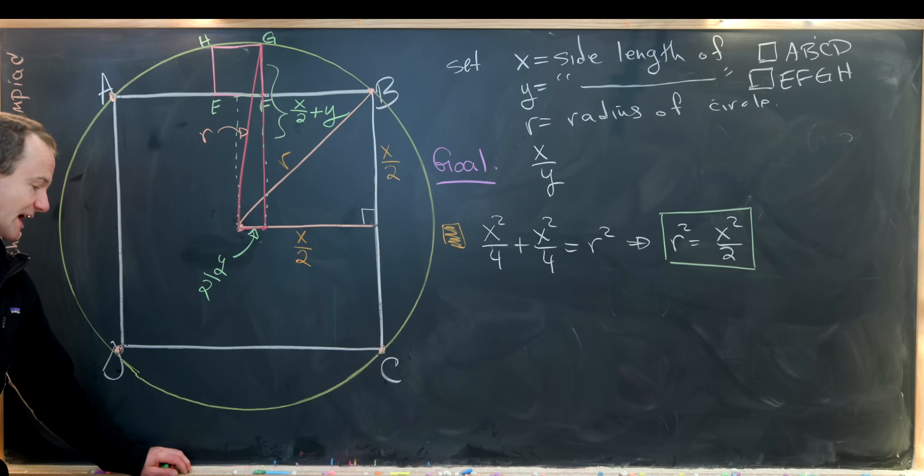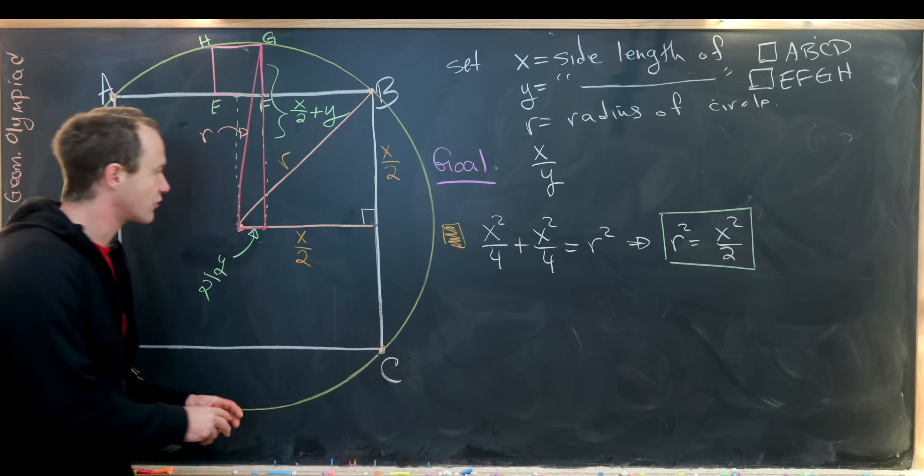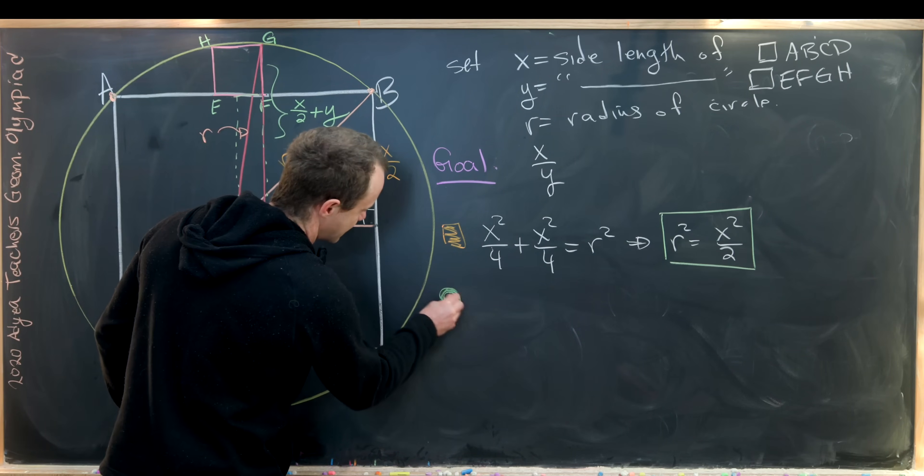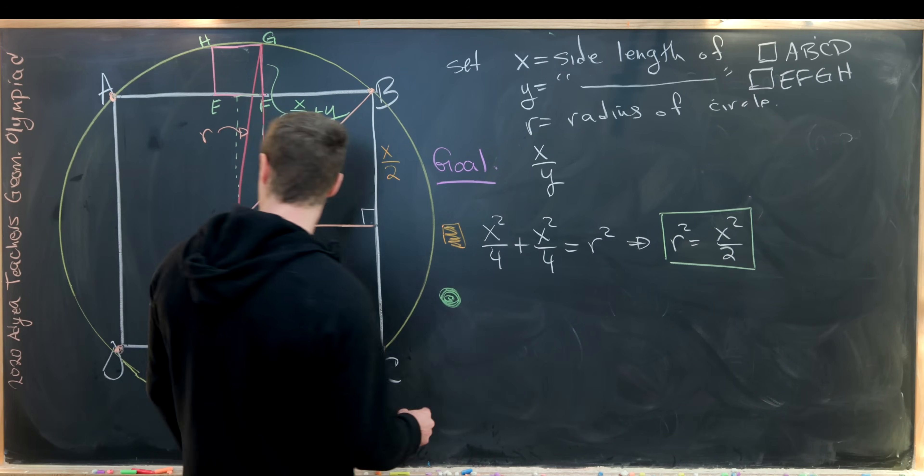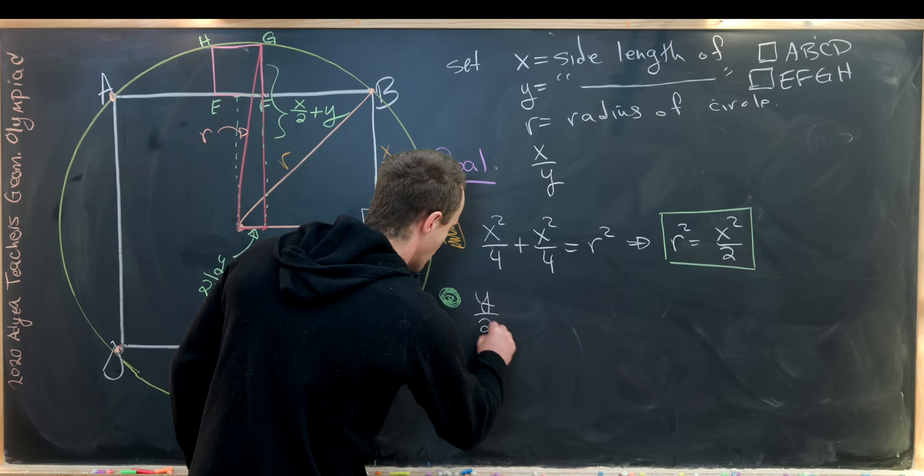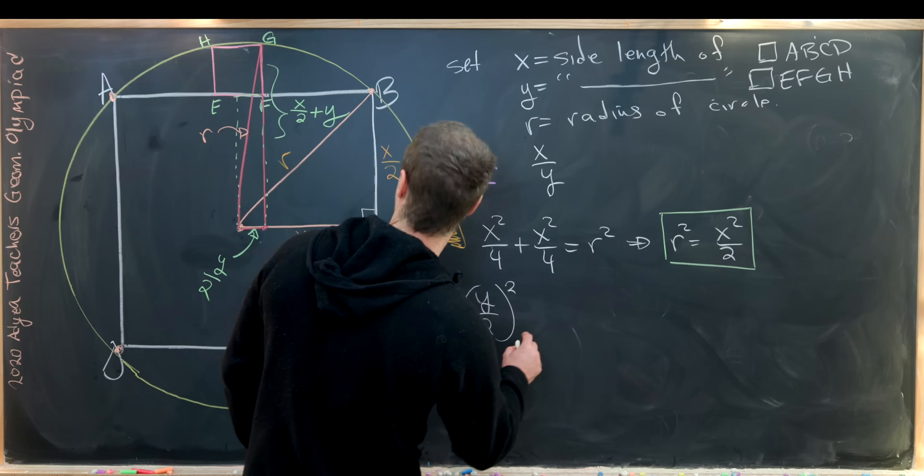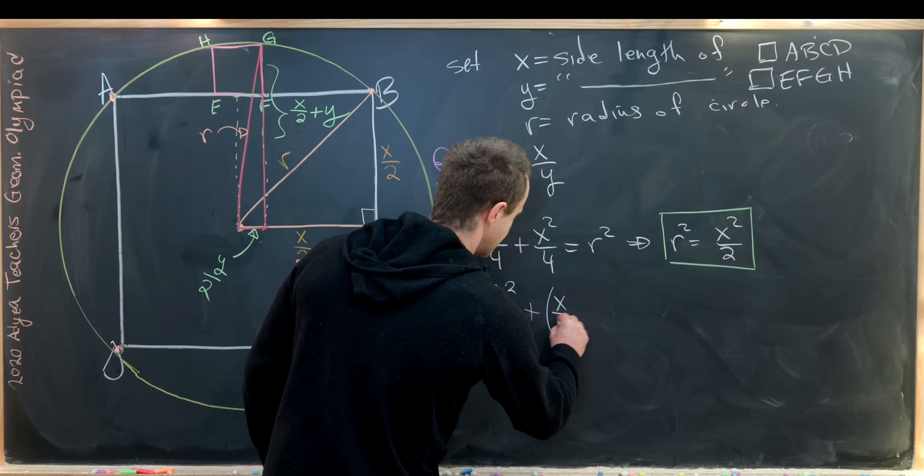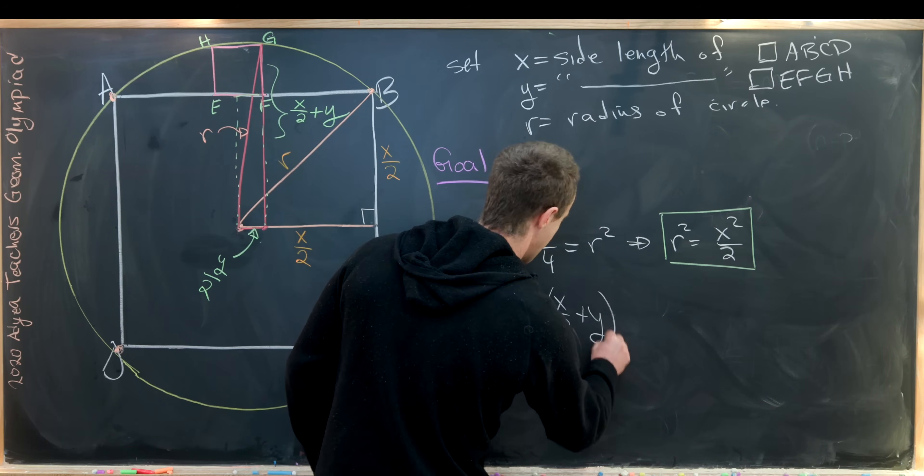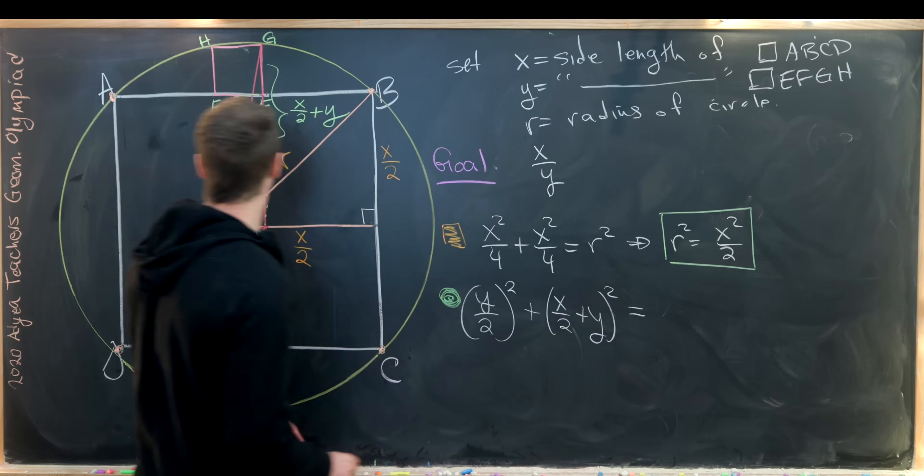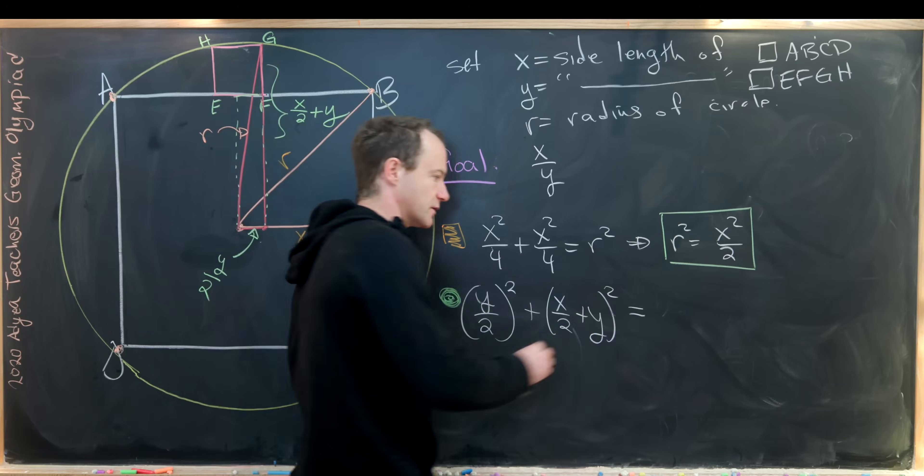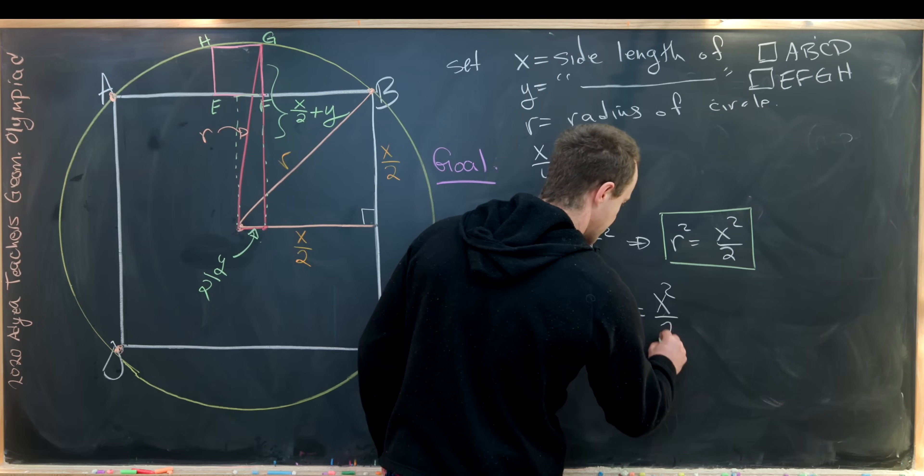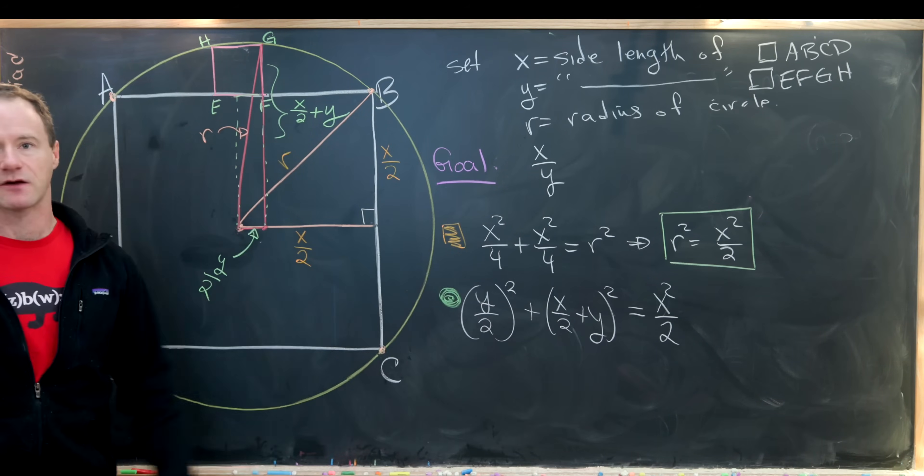So maybe we'll use like a green dot to show that we're doing the calculation from that. And we'll apply the Pythagorean theorem again. So we have Y over 2 quantity squared plus X over 2 plus Y quantity squared equals R squared. But let's recall that R squared was X squared over 2. So we can make that replacement.